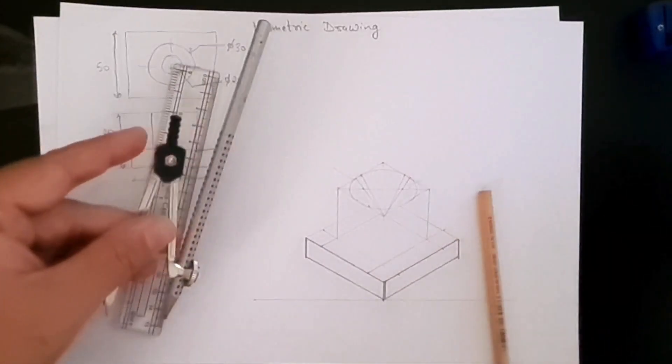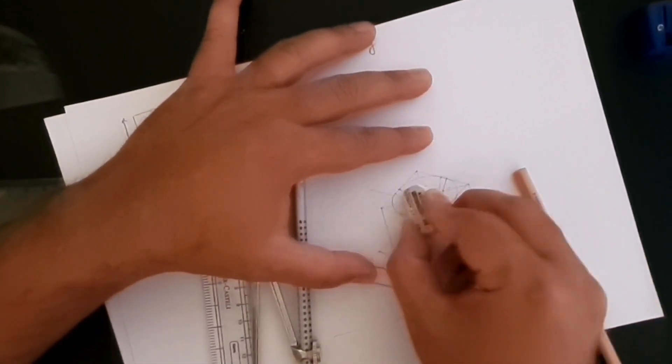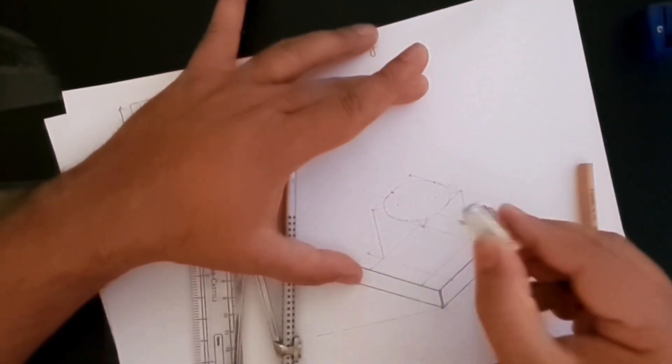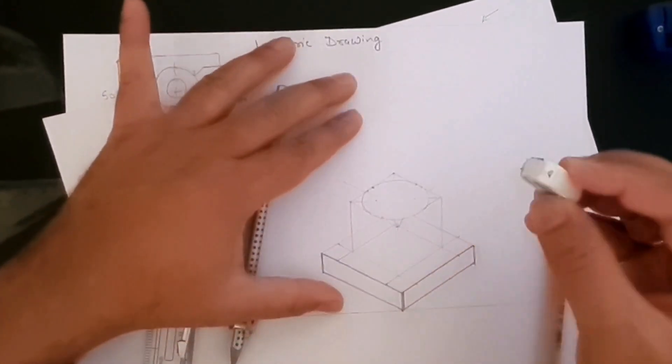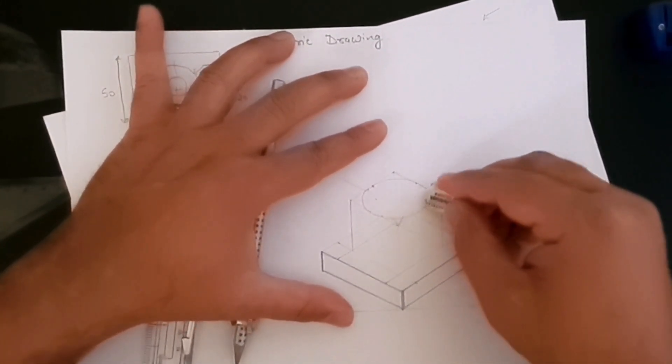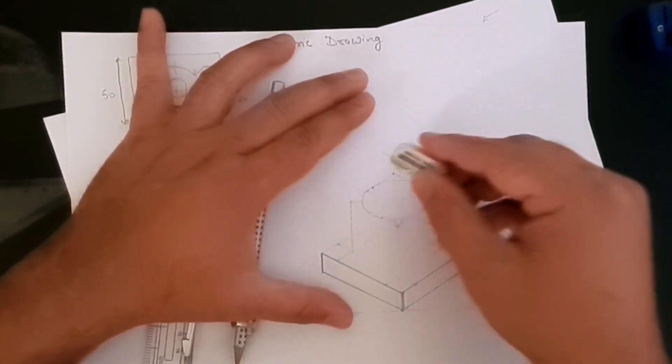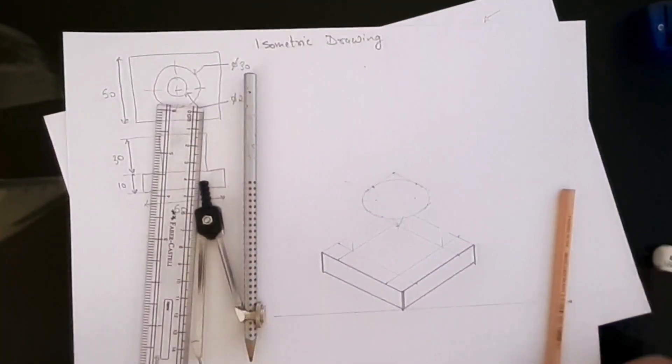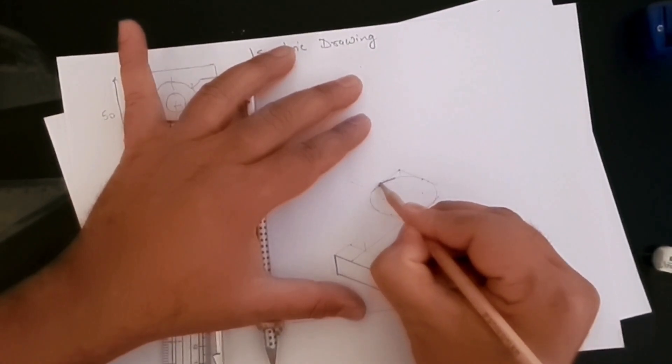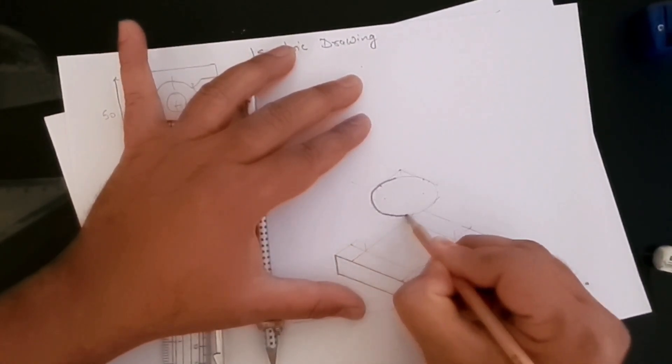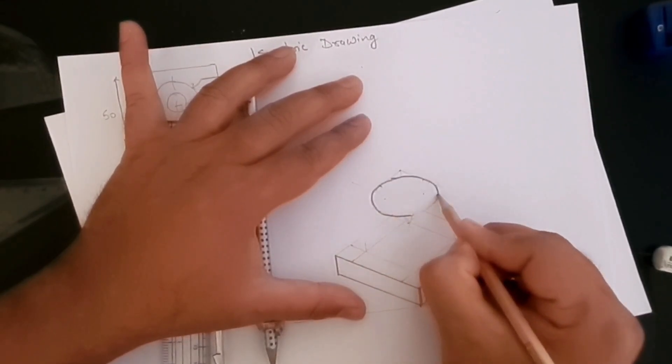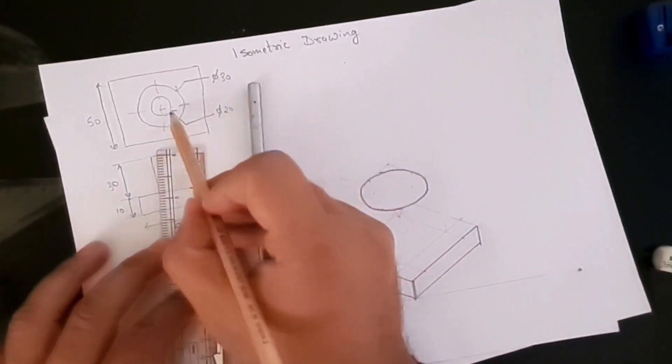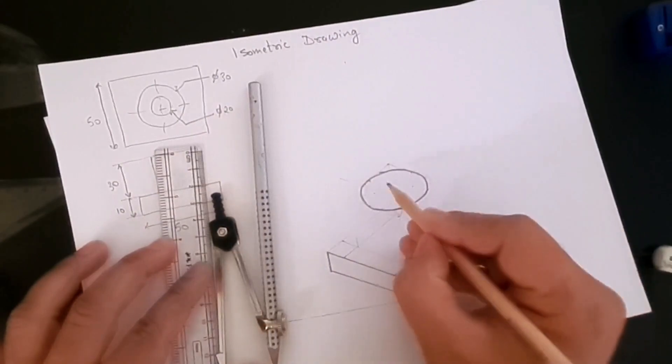Right, so the isometric circle has been created. So let's rub off the construction lines because we don't need them right now. So that's your circle created here. Now let's also rub off these lines because we won't need them, and let's make this circle a bit darker so it is visible.